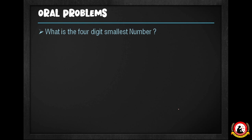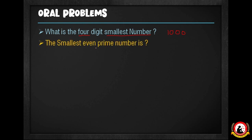What is the 4-digit smallest number? The smallest 4-digit number — if you say the leading digit is 1 and the rest are 0, then the four-digit smallest number is 1000. Very good, perfect!